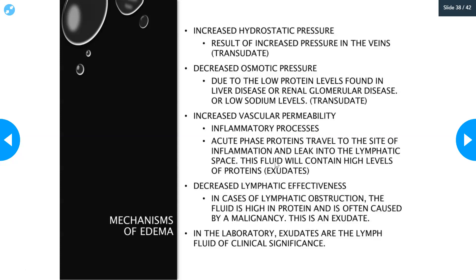The third mechanism is increased vascular permeability, due to inflammatory processes — as discussed in our inflammation lesson. Acute phase proteins travel to the site of inflammation and leak into the lymphatic space, causing fluid accumulation with high levels of protein, and white cells are called to the area. These infiltrates are usually exudates. Inflammation in this case is usually localized to wherever the injury is — it could be a cut, a wound, or a tendonitis — wherever the inflammation is, that's where the edema is.